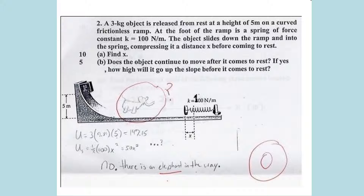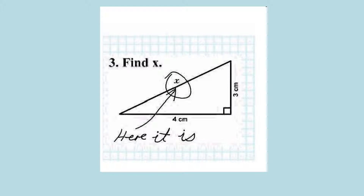Here are some funny examples of things you should not do. Does this object continue to move after it comes to rest? No, there's an elephant in the way. These are not ways that we answer questions. And 'Find X'? Well, there it is — a smart aleck trying to answer the question. So think back to that expanding question: we don't want to be smart alecks trying to find ways to answer without actually using any of the properties.